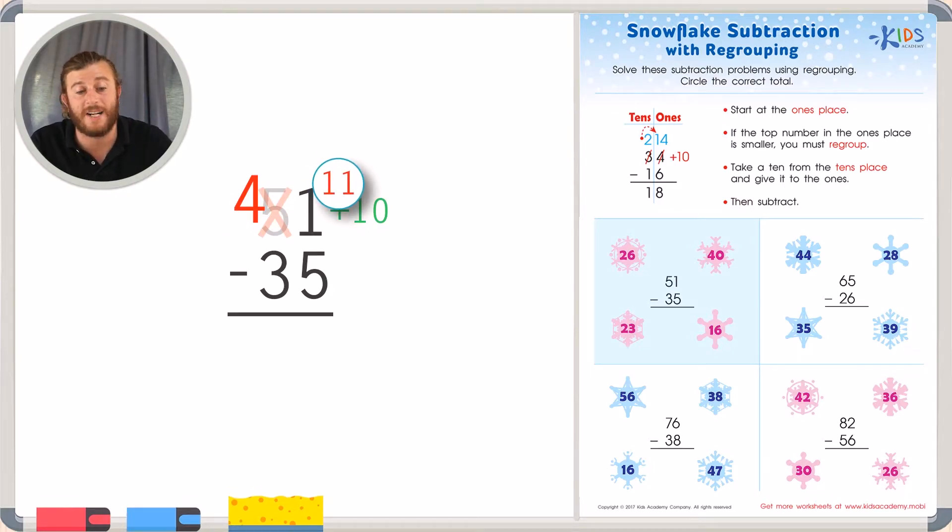Now we can subtract 11 minus 5 and counting up from 5, we get to 11. 11 minus 5 is 6, and 4 minus 3 is 1, giving us an answer of 16. Let's circle 16.